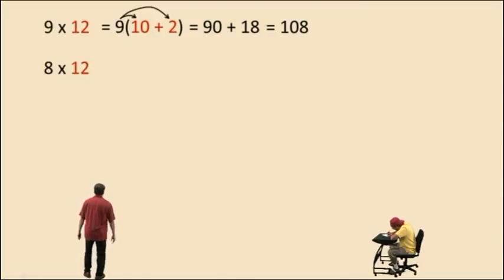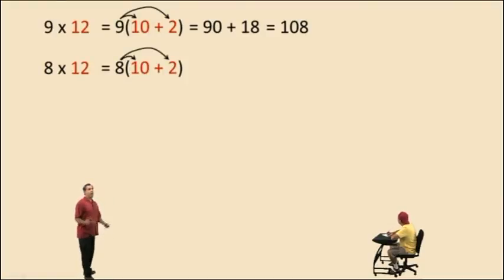8 times 12. Well, that's 8 times 10 plus 2. And we distribute. 8 times 10 is 80. 8 times 2 is 16. And we add those two together and we get 96. 8 times 12 is 96.